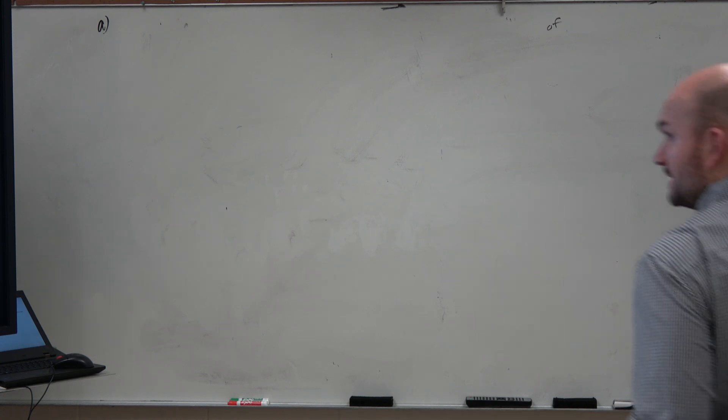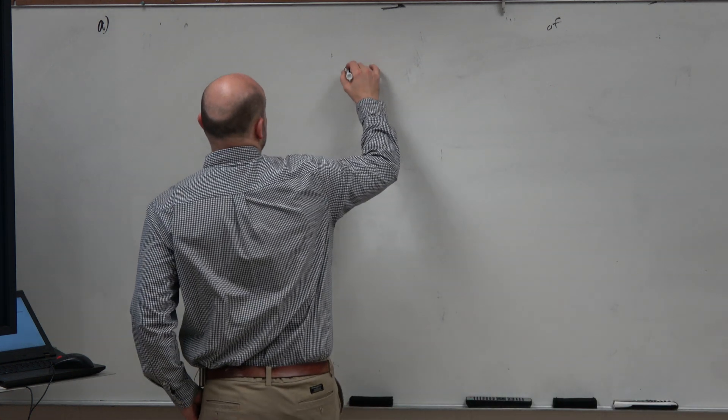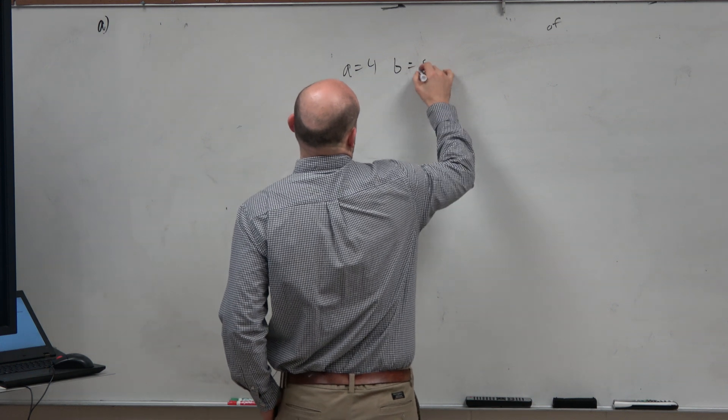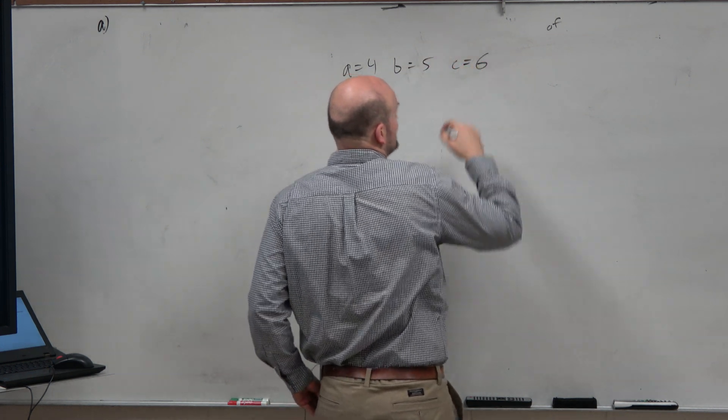So we have a triangle. We're given three lengths here. A is equal to 4, B is equal to 5, and C is equal to 6.